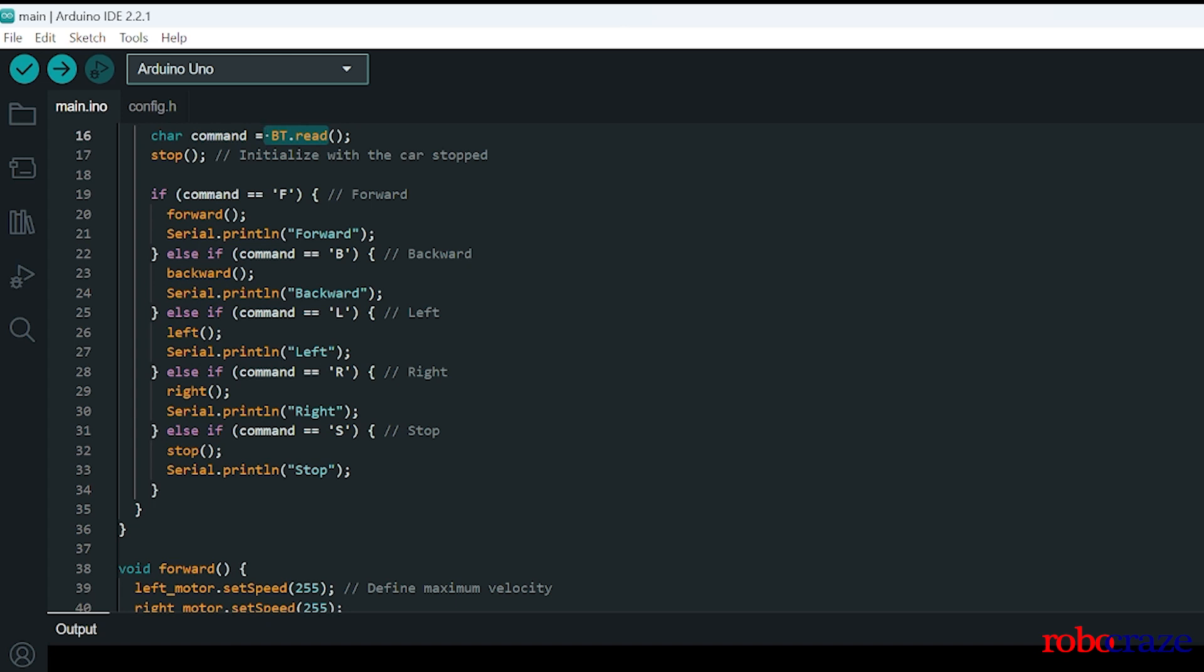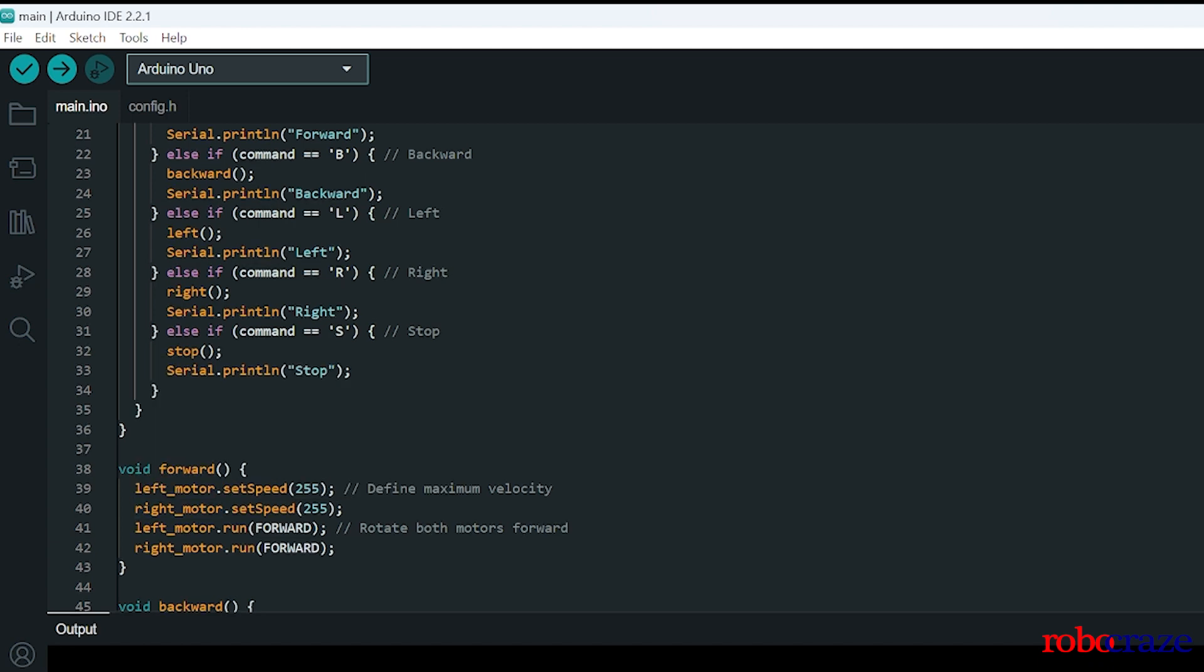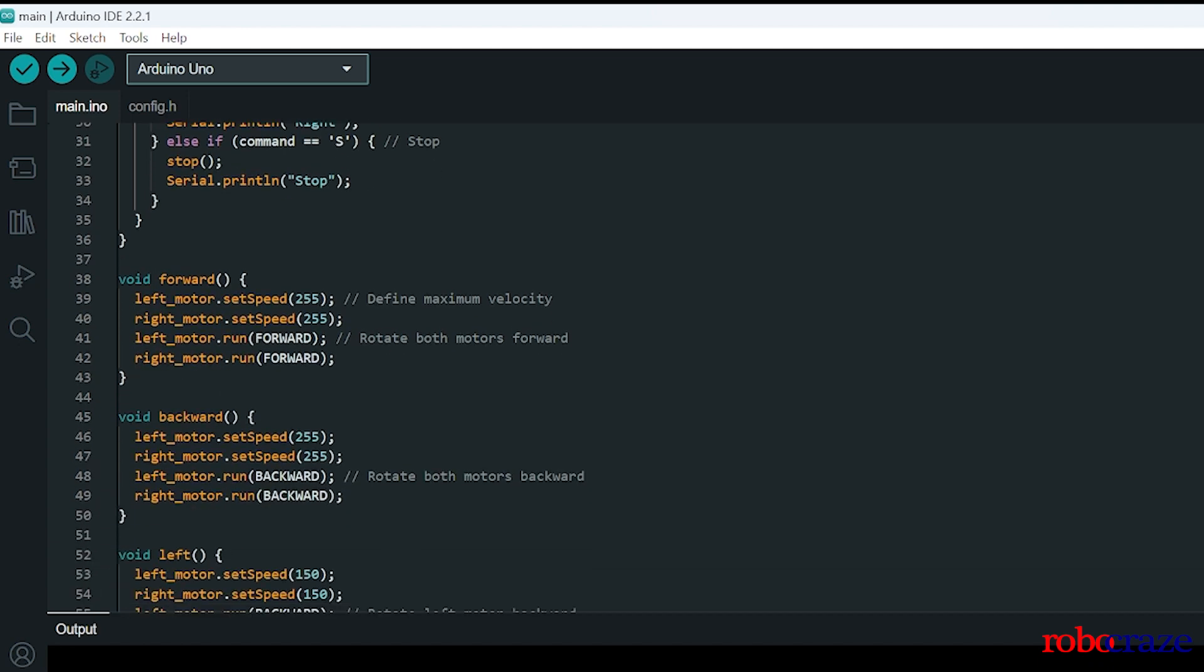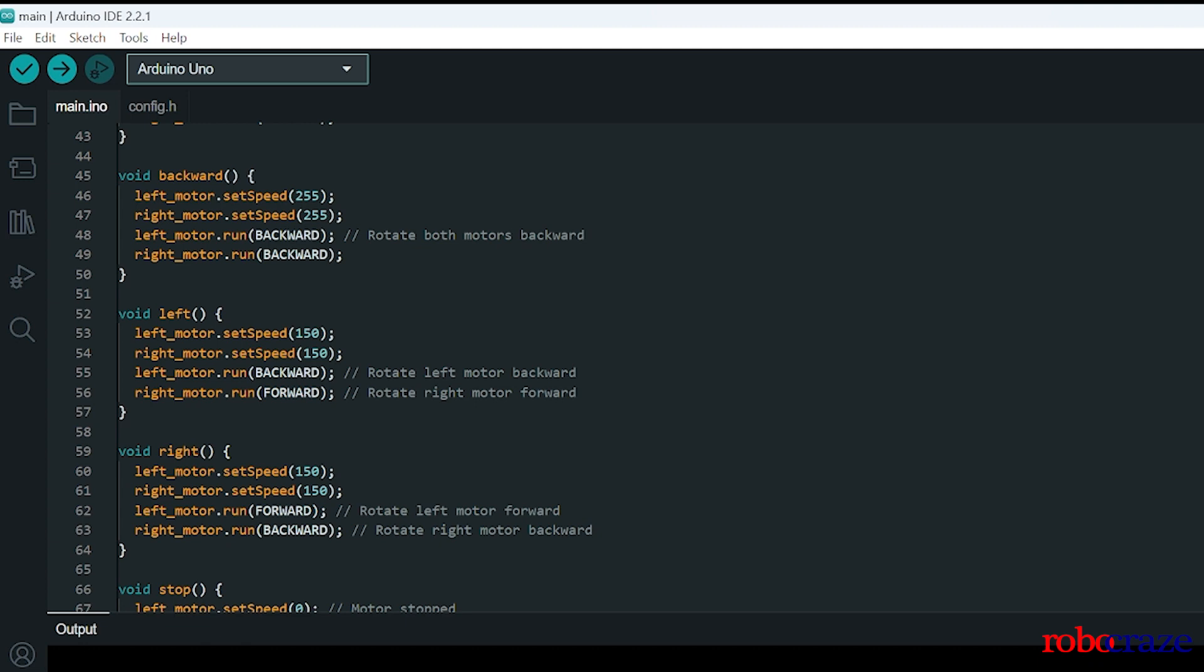And finally we'll be using S character for stop. So whenever whichever character we receive, suppose if we receive F then the forward function will be called and forward function will make left and right both wheels rotate forward. And for backward we will be making them rotate backward. For left, the left wheel will be rotating backwards and the right wheel will be rotating forward.